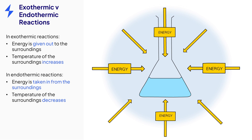You can identify whether a reaction is exothermic or endothermic by taking the initial and final temperatures of a reaction mixture and observing whether the temperature increases or decreases. A good way of remembering which way around these reactions work is using 'exo equals exits' to help you, indicating that energy exits the reaction mixture.